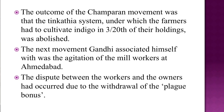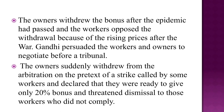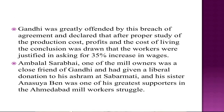The next movement Gandhi associated himself with was the agitation of the mill workers at Ahmedabad. The dispute between the workers and owners had occurred due to the withdrawal of the plague bonus. The owners withdrew the bonus after the epidemic had passed, and the workers opposed the withdrawal because of rising prices after the war. Gandhi persuaded the workers and owners to negotiate before a tribunal. The owners suddenly withdrew from the arbitration and declared they were ready to give only 20 percent bonus, threatening dismissal to workers who did not comply. Gandhi declared that the workers were justified in asking for a 35 percent increase in wages.